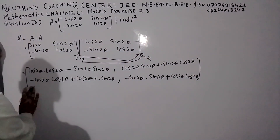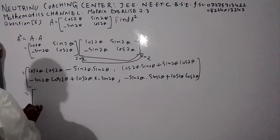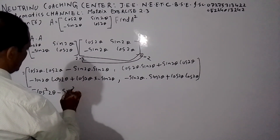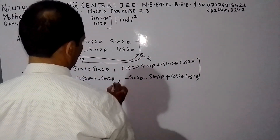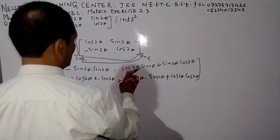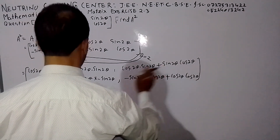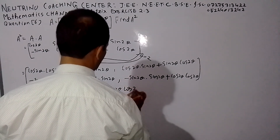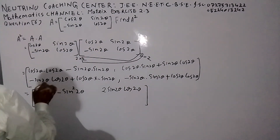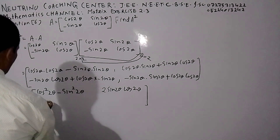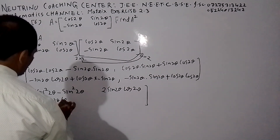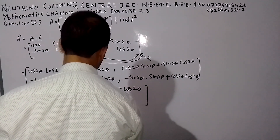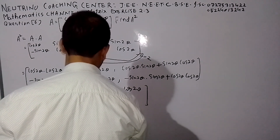Now multiplying: here we have cos²(2θ) minus sin²(2θ). Here we have sin(2θ)cos(2θ) plus cos(2θ)sin(2θ), which equals 2·sin(2θ)·cos(2θ). Here we have minus 2·sin(2θ)·cos(2θ), and here cos²(2θ).